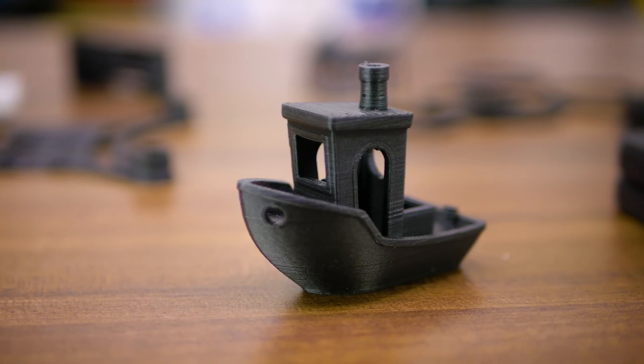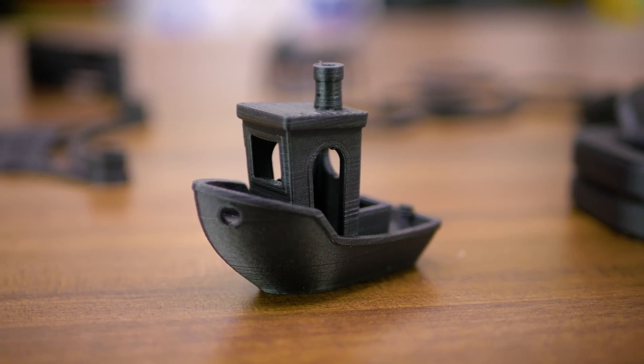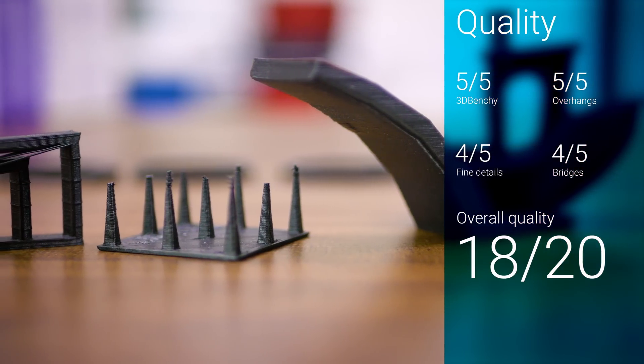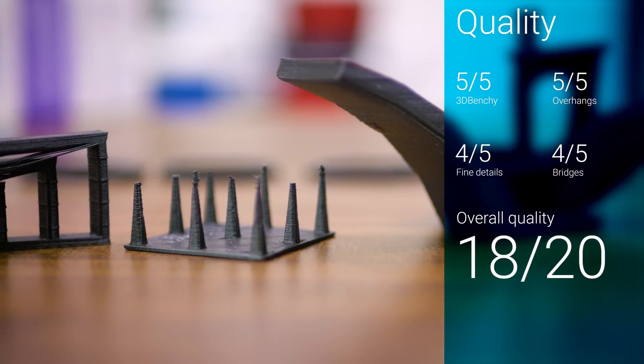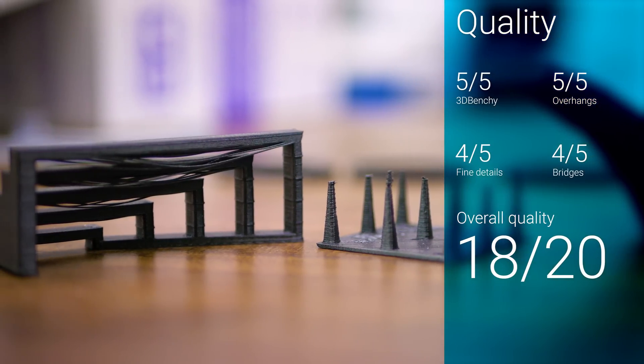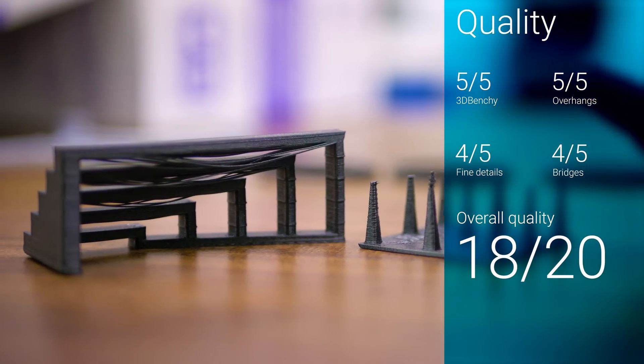As expected from an integrated ecosystem, this results in clean and crisp prints with the 3D Benchy and the overhangs test coming out flawlessly, no stringing but slightly mangled tips on the fine details parts and decent bridging results, netting the Onyx Plus Mark II combo a very good 18 out of 20 quality score.